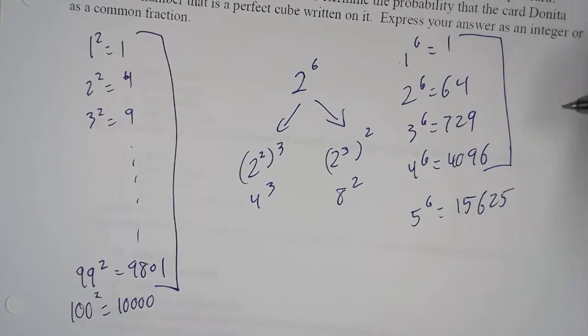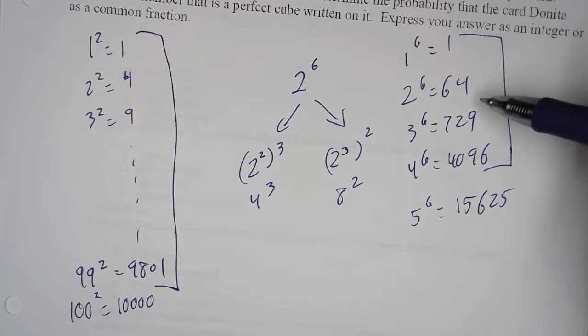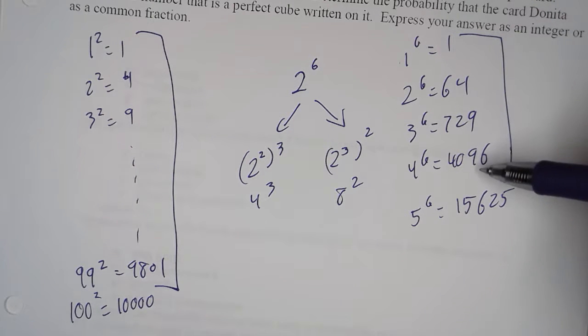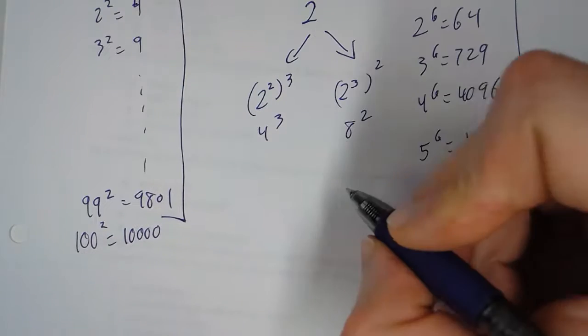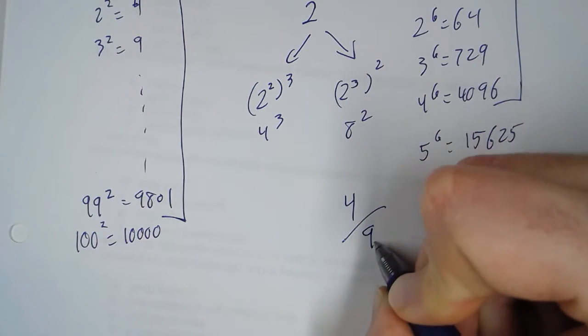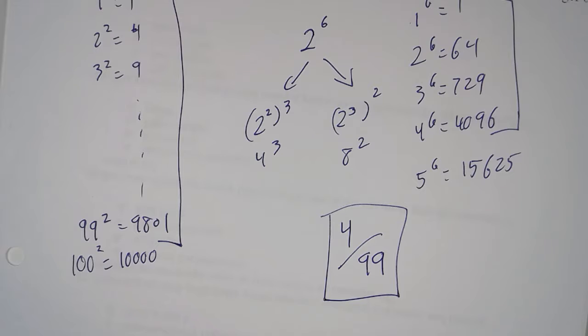So, these four are the only numbers on our list that are perfect squares, because you can take the square root of all of them, but they're also perfect cubes. So, therefore, they're sixth. So, that means out of 99, only 4 will work. So, there is our probability, and we're done.